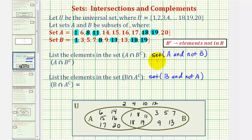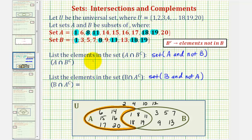Now we want to determine which elements are in set A and not in set B. We know all these elements here are in set A, but the elements in the intersection of A and B are in B. Therefore the elements that are in set A but not in set B would be these elements here. So the elements in A intersect B complement are six, fourteen, fifteen, sixteen, seventeen, and twenty.